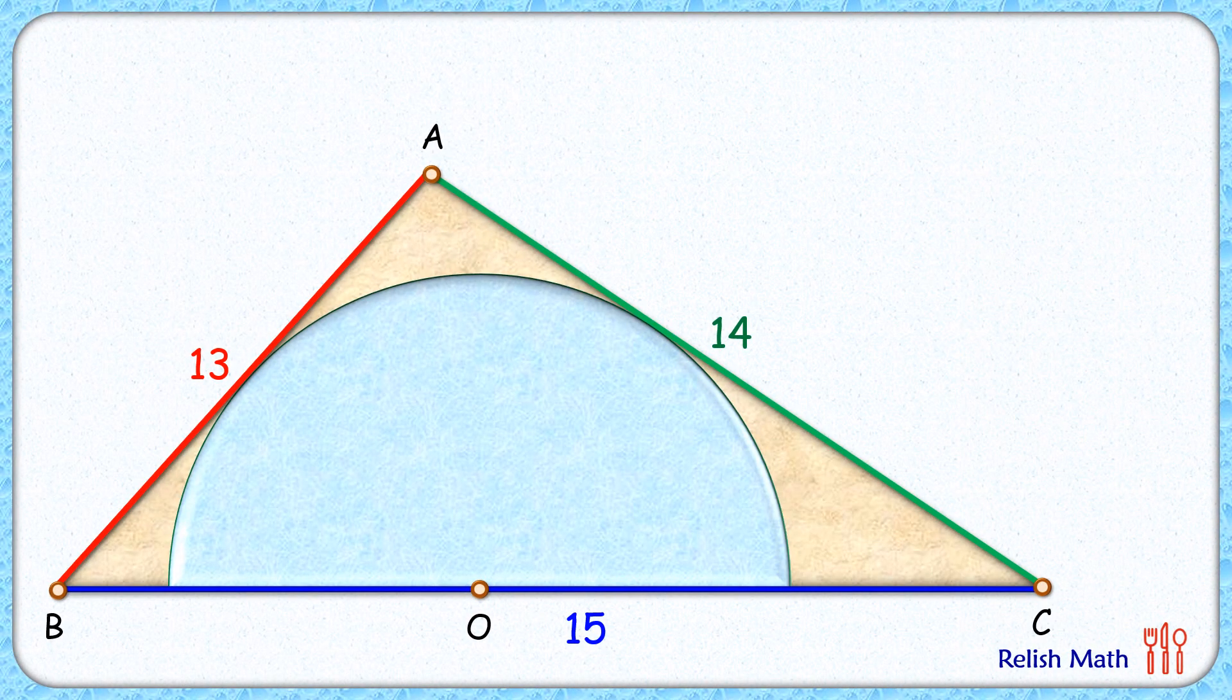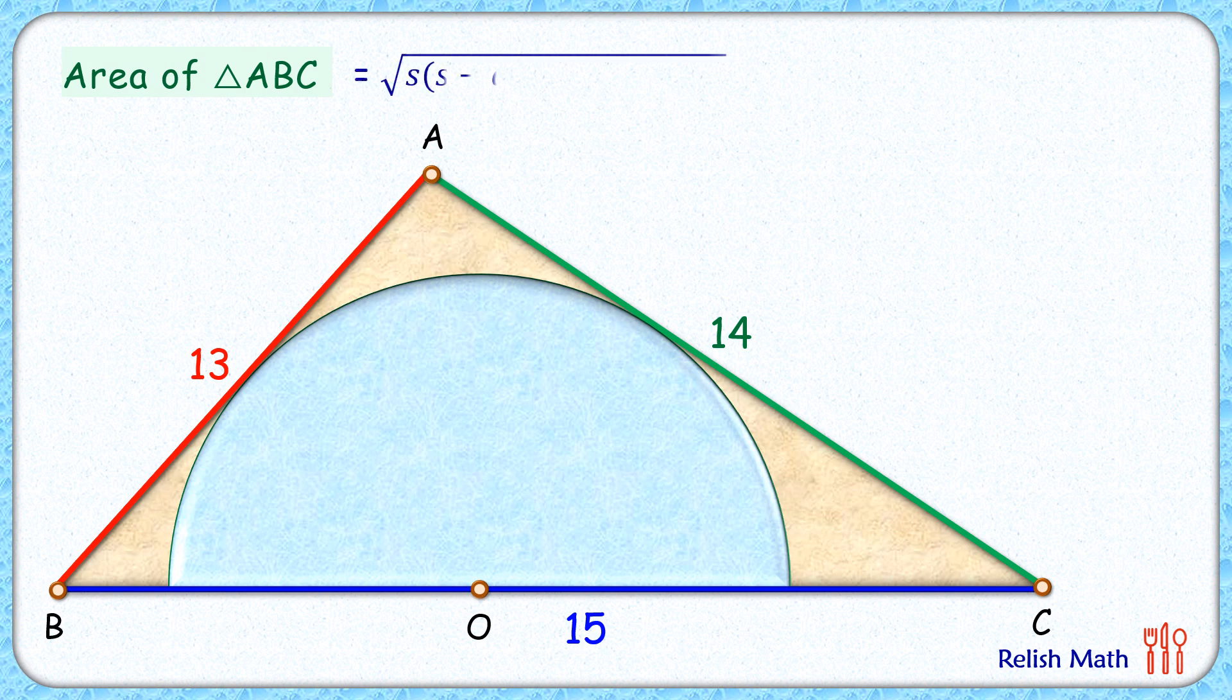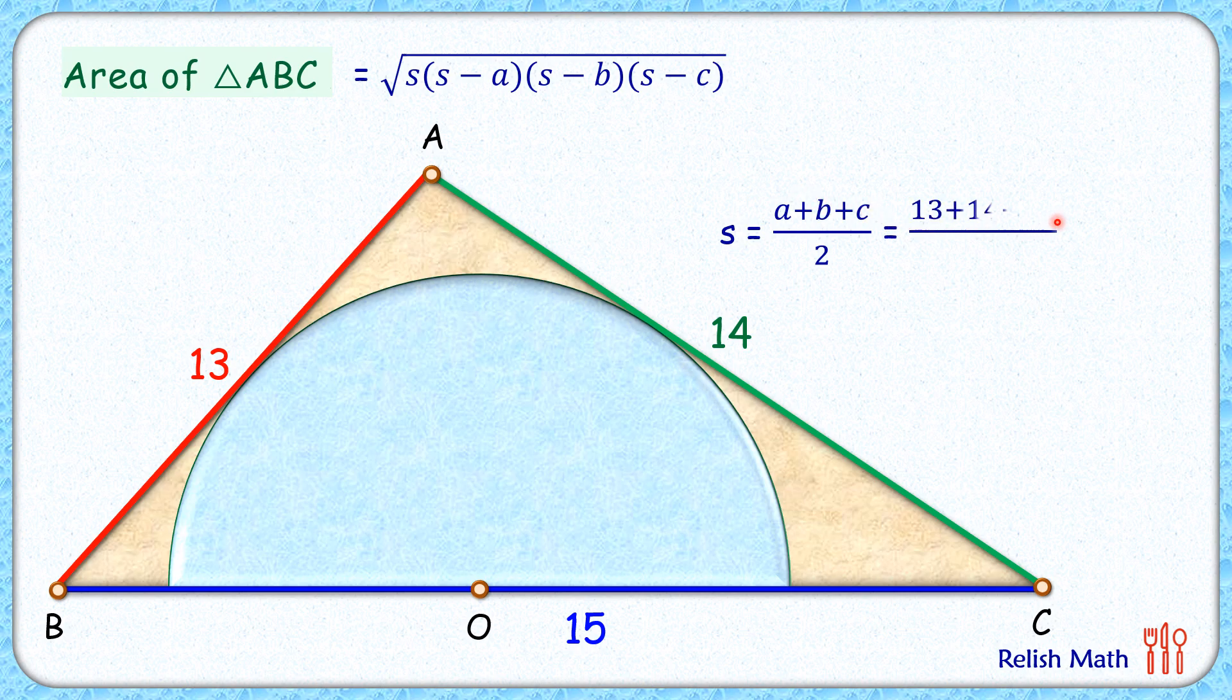Let's check the solution. To start with, we'll first find the area of this triangle by Heron's formula. Heron's formula is: area of any triangle is square root of s times s minus a times s minus b times s minus c, where s is semi-perimeter, so that is sum of all sides divided by 2, and in this case it is 21 centimeters.